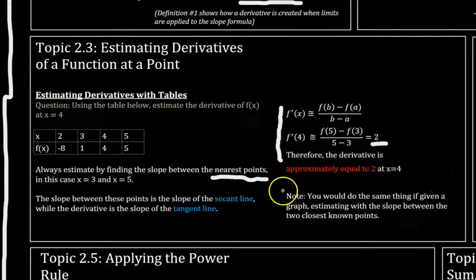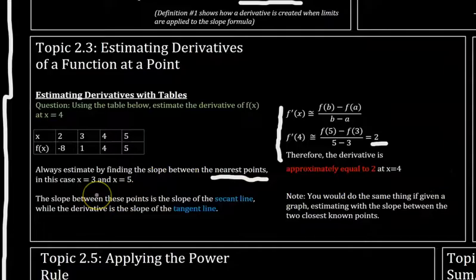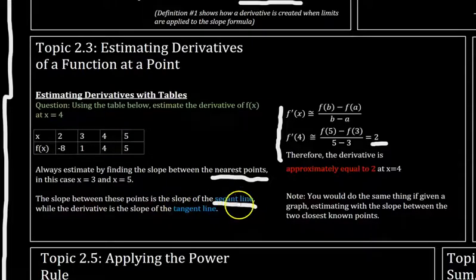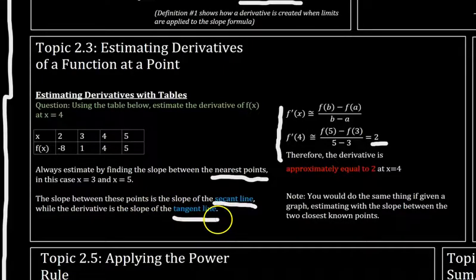And one other thing to keep in mind is that the slope between these two closest points is called the slope of the secant line not to be confused with secant the trig function that's completely unrelated and then the derivative is the slope of the tangent line. You might see those terms on a test or something like that.